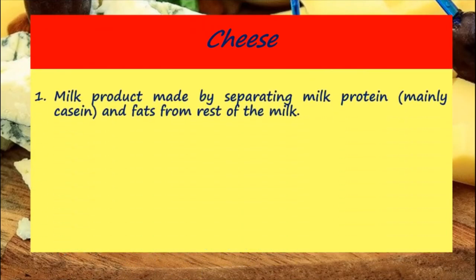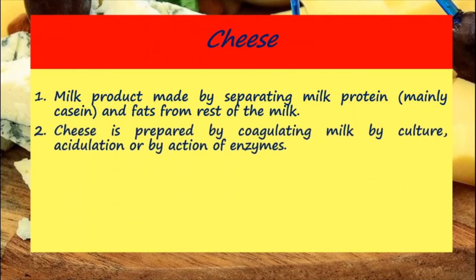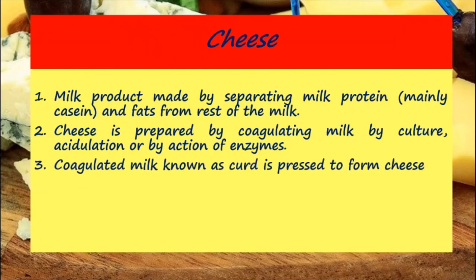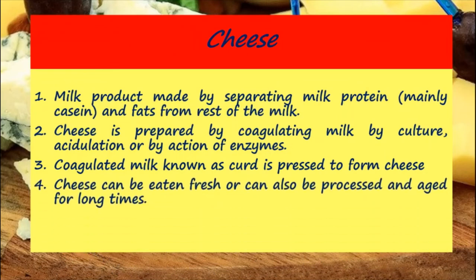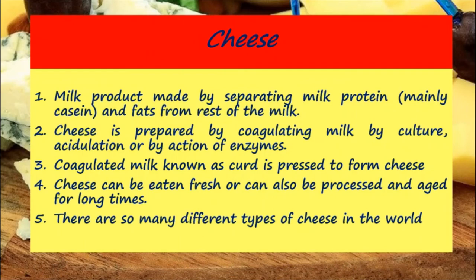Cheese is a milk product made by separating milk protein, mainly casein, and fats from the rest of the milk. Cheese is prepared by coagulating milk by culture, acidulation, or by action of enzymes. Coagulated milk known as curd is pressed to form cheese. Cheese can be eaten fresh or can be processed and aged for long times. There are so many different types of cheese in the world today.